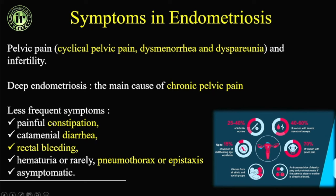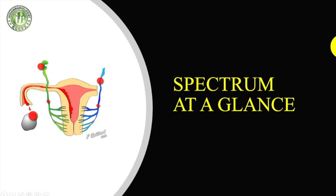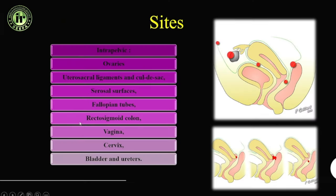Constipation is important because a retroverted uterus is also an ancillary finding in the endometriosis spectrum. Just by the shape of the uterus and its proximity to the rectal wall, you may be missing macroscopic deep pelvic deposits, but due to that proximity the patient might have painful constipation.